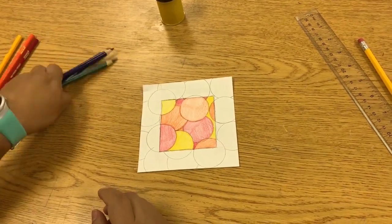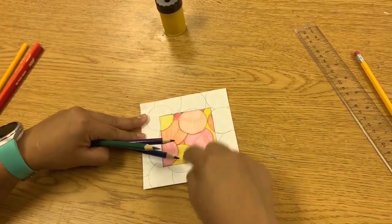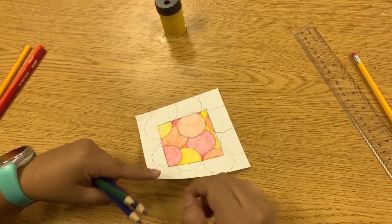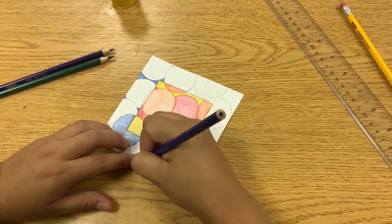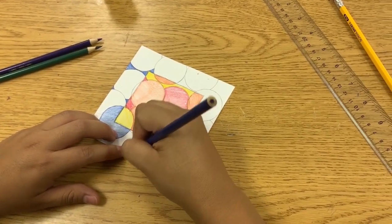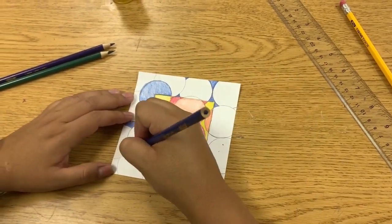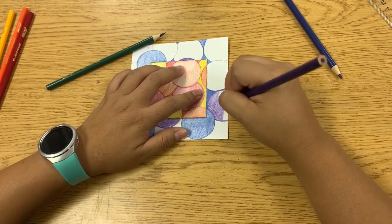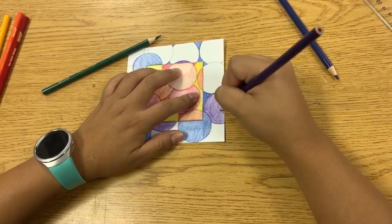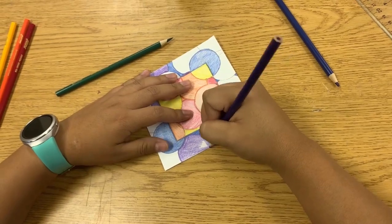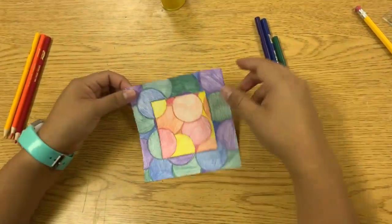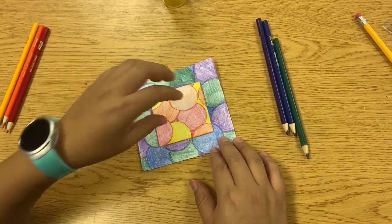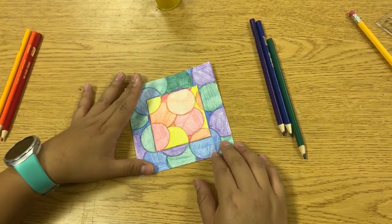So now I'm going to move on to my cool colors and I'm going to start to color in the border using only cool colors and not ever going inside of this square. I am finished with my cool and warm square. You'll see that it's a great design. I have my warm colors all in one area and my cool colors in the outside.